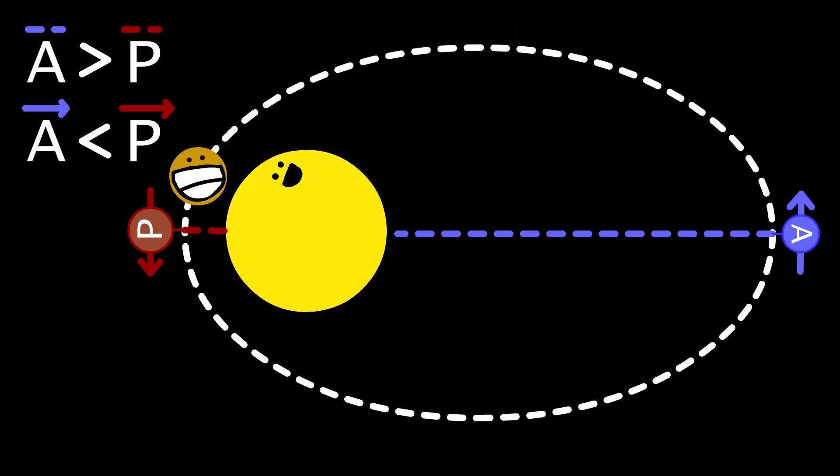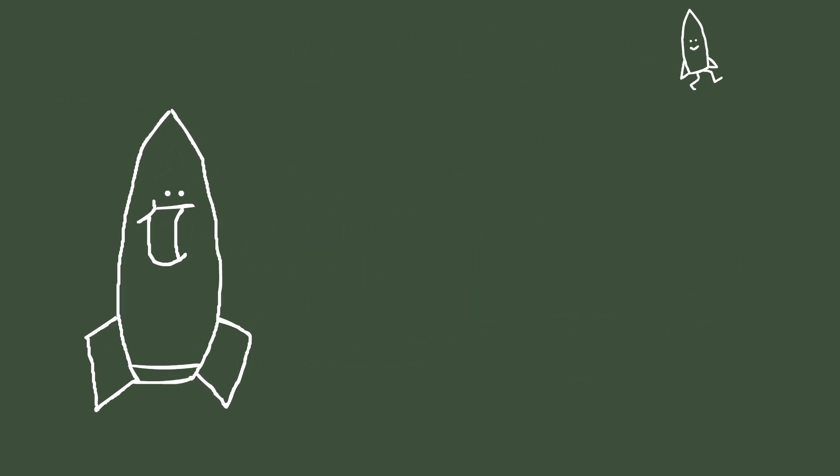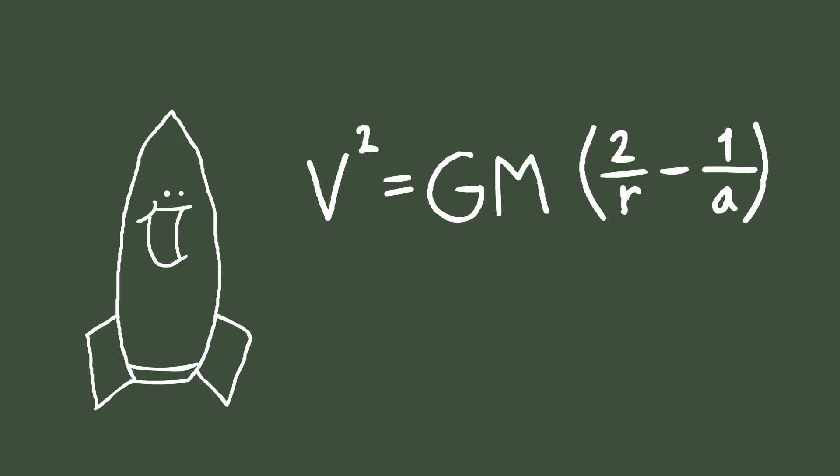The average distance of the periapsis and the apoapsis is called the semi-major axis. This value is helpful when doing math. You can find your velocity on any complete orbit with this equation.